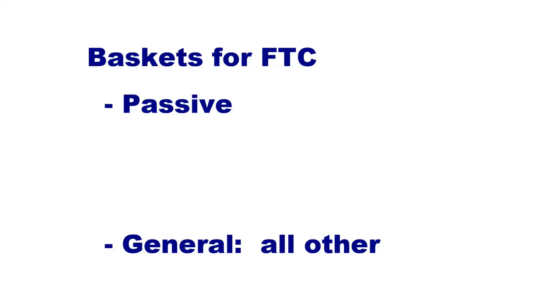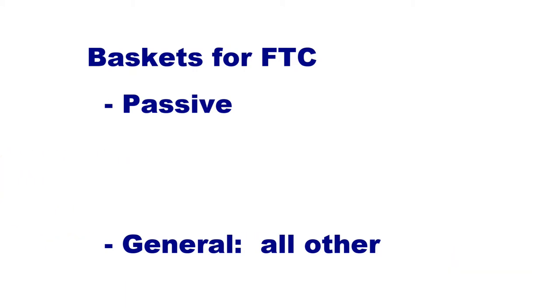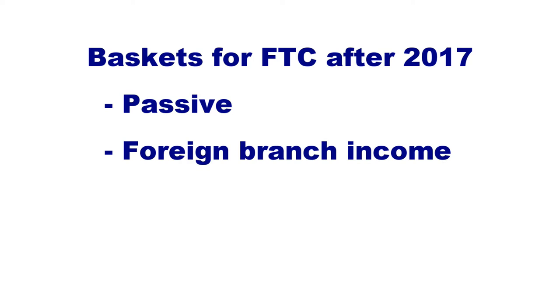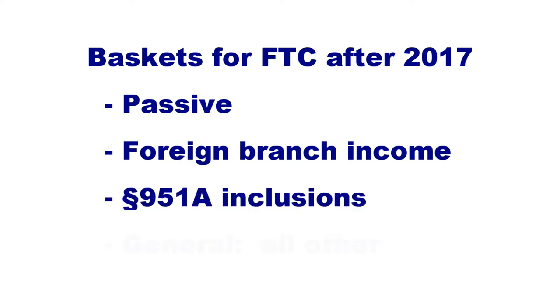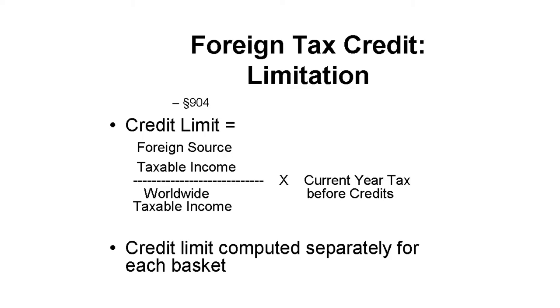From 2007 through 2017, there were only two baskets: passive and general. After 2017, there are four baskets. The first basket since 1987 is passive, and the last basket is everything not in another basket. Beginning in 2018, baskets other than passive are foreign branch income, subpart F inclusions of global intangible low-taxed income, and general — or everything else. Separate foreign tax credit limitation calculations must be made for each basket each year.